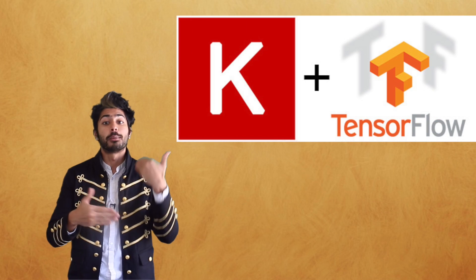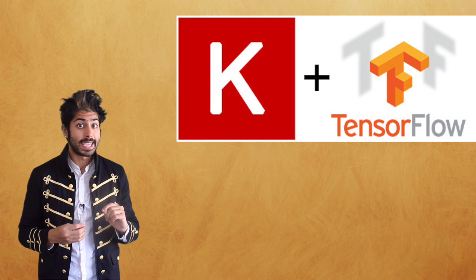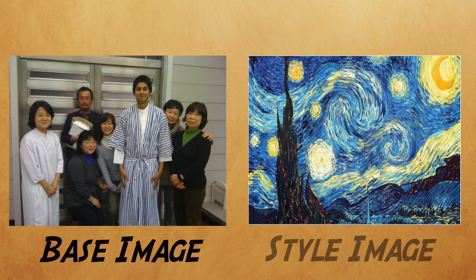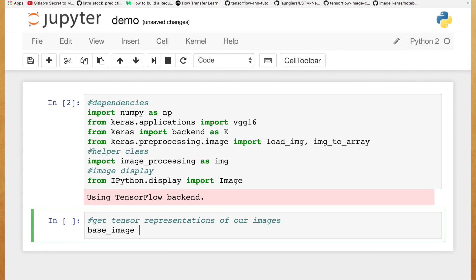Let's understand how this style transfer process works by writing our own script in Keras with a TensorFlow backend. We're going to use a base image, which is this extremely attractive photo of me, and a style reference image. Our script will take the style of this image and apply it to the base image. So, we're going to feed these images into a neural net by first converting them into the de facto data format for all neural nets, tensors.